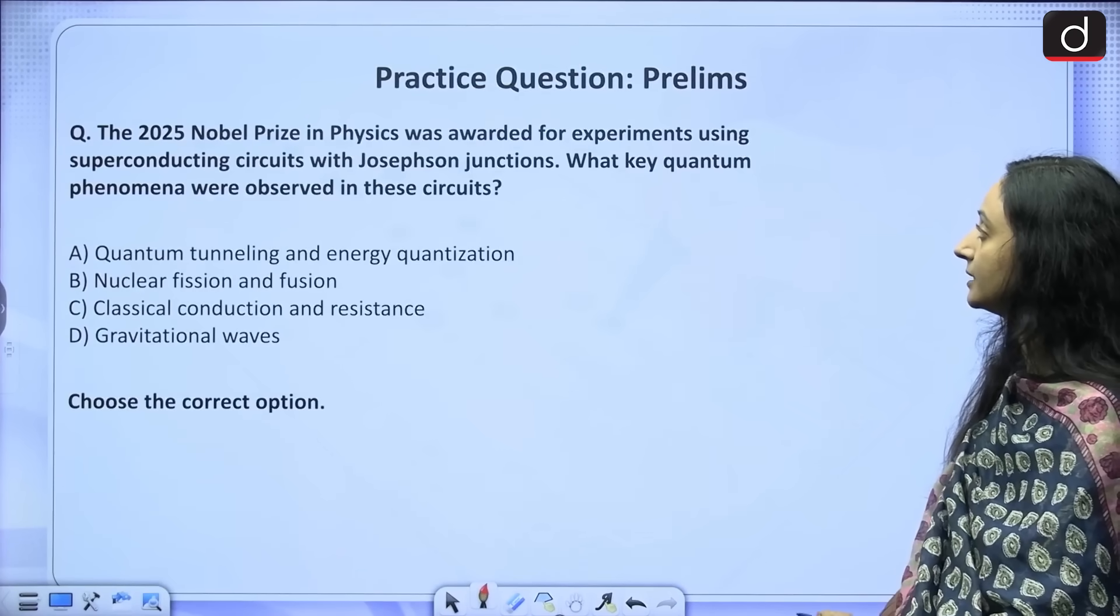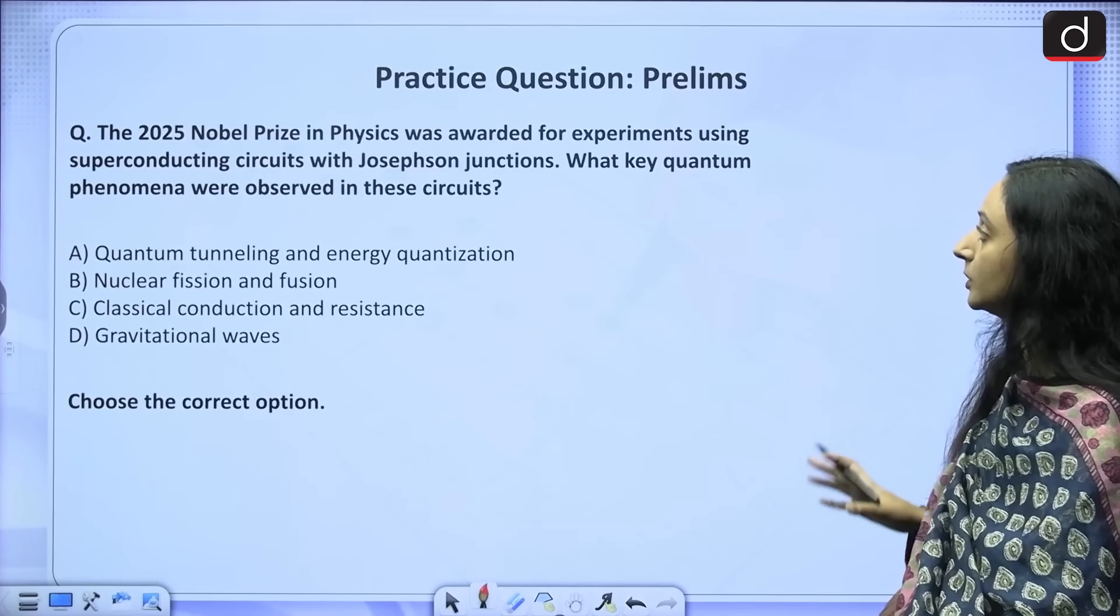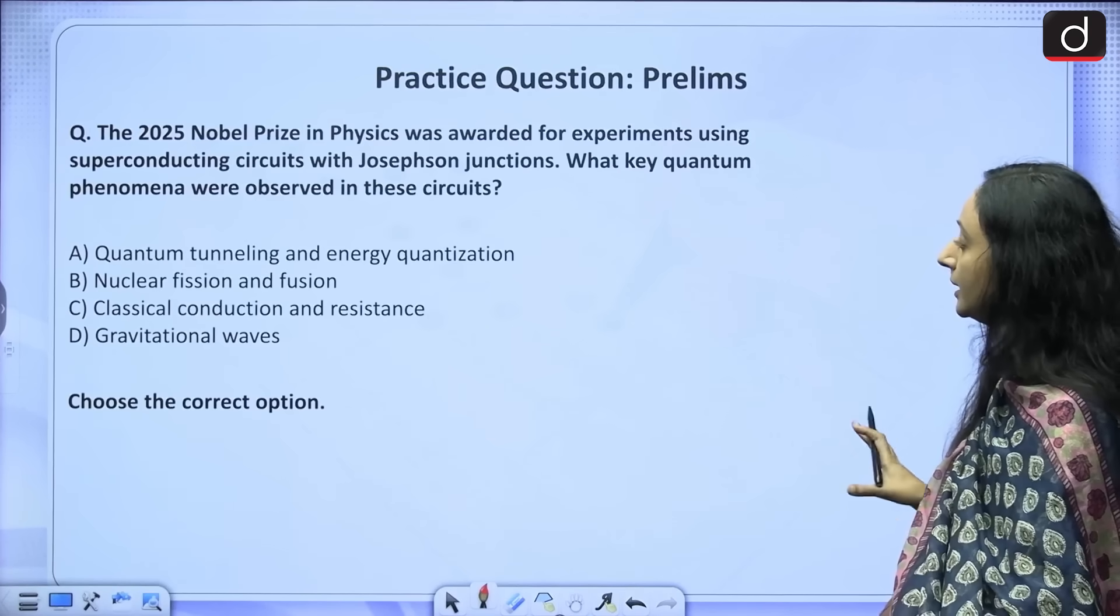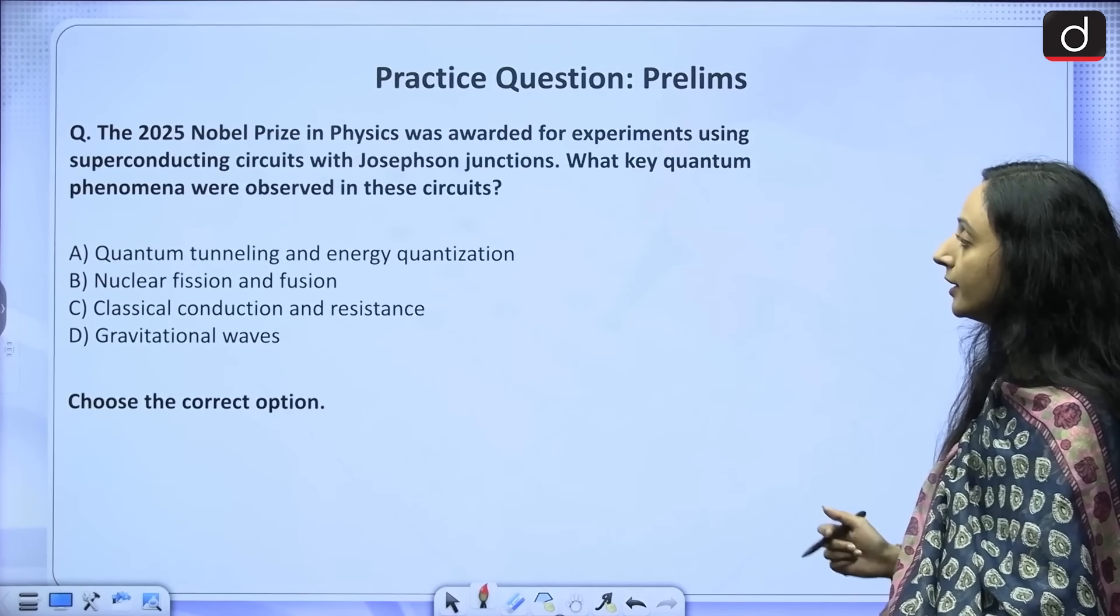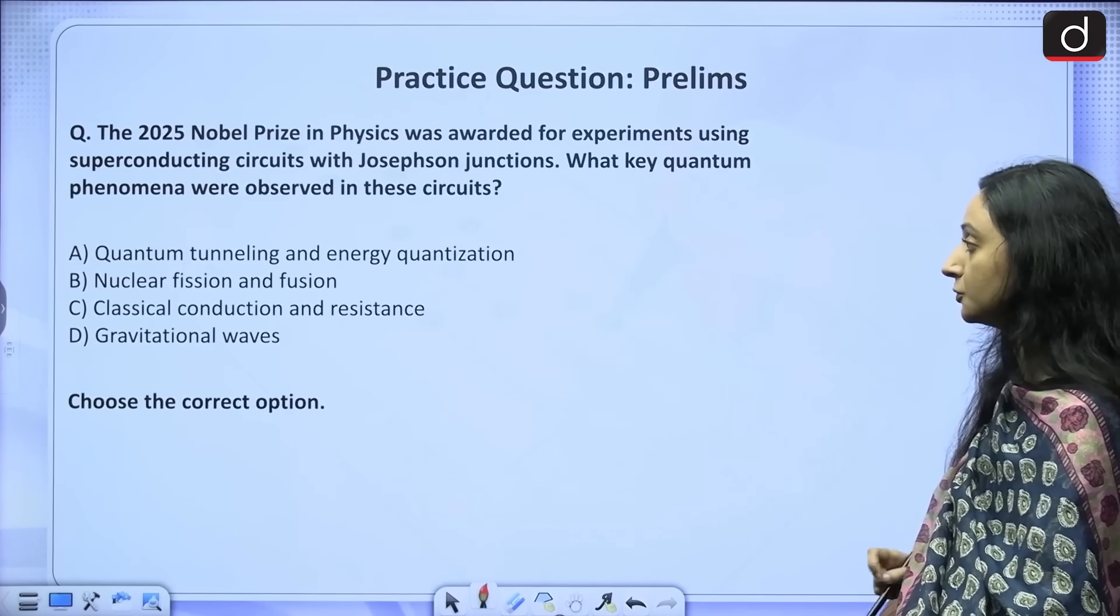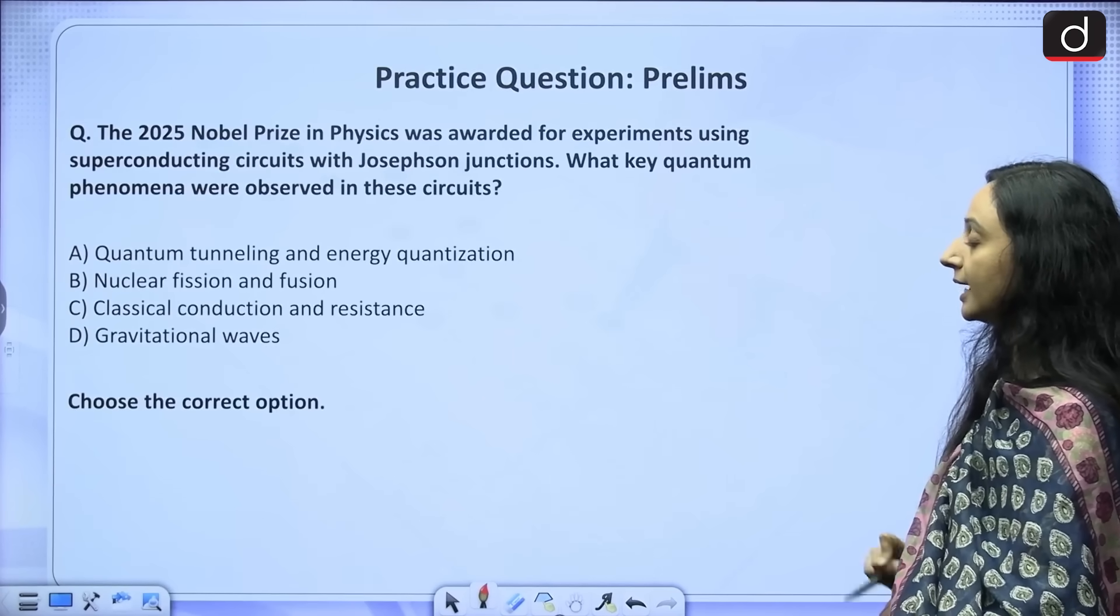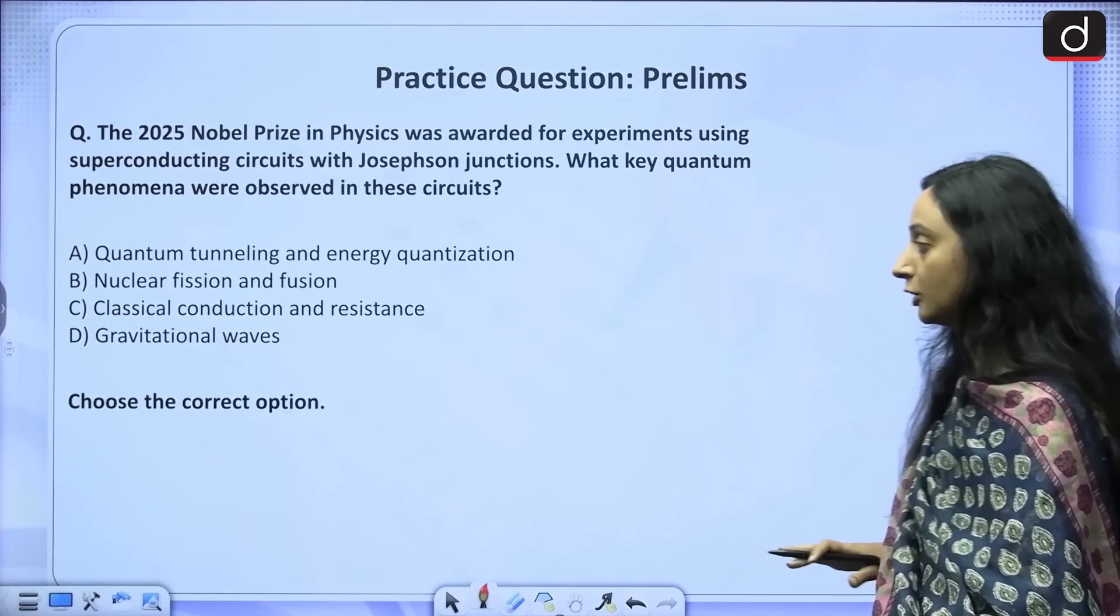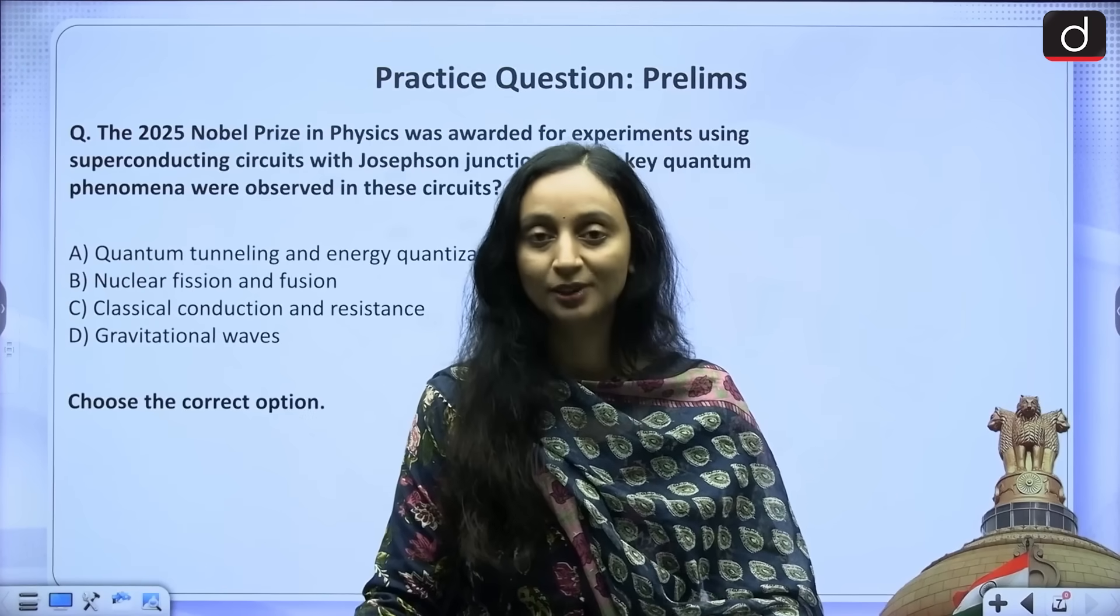The 2025 Nobel Prize in Physics was awarded for experiments using superconducting circuits with Josephson junctions. What key quantum phenomena were observed in these circuits? A. Quantum tunneling and energy quantization. B. Nuclear fission and fusion. C. Classical conduction and resistance. D. Gravitational waves. Choose the correct option. Please provide your answers in the comments section and we will meet in a new video. Thank you.